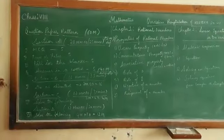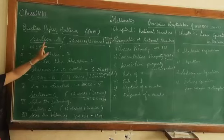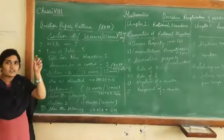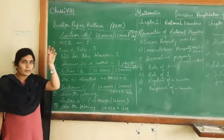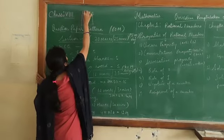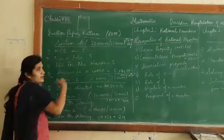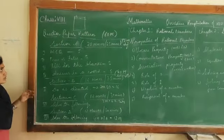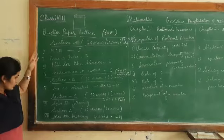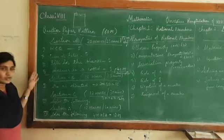I would like to tell you one more thing - write the question number, bit number, and section number properly in your answer sheet. Put a page number on the head of the paper - your name, subject particulars - then start your examination bit-wise. You need to solve all the bits; there is no choice option. Answering all questions is compulsory.